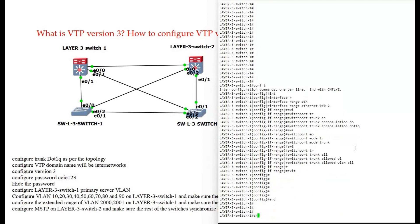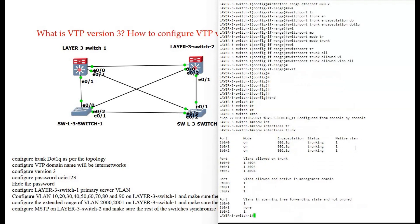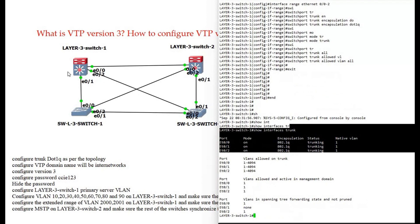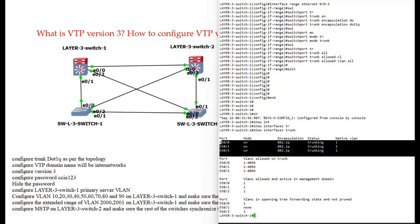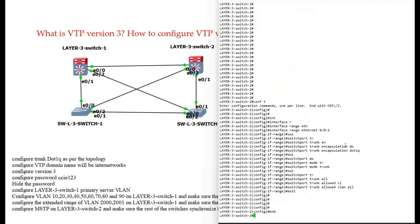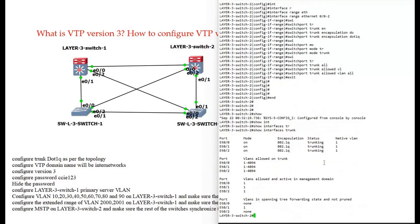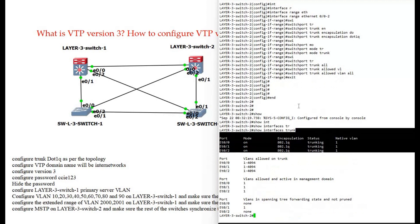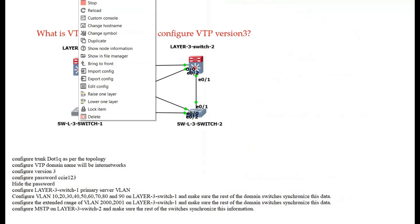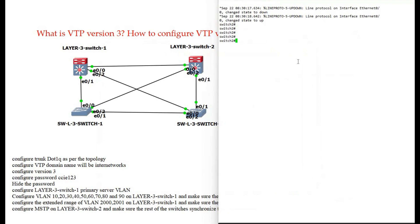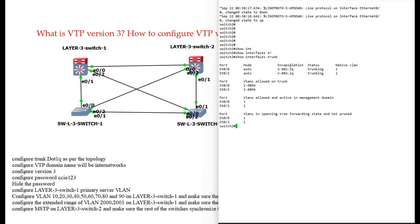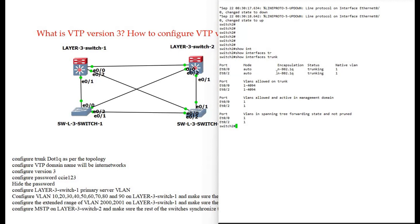Let's see how it looks. Show interfaces trunk. You can see switch 1 has three trunk links — Ethernet 0/0, 0/1, and 0/2. Same way, let's look at switch 2: show interface trunk. Everything looks good there as well. This switch has also become a trunk because of the negotiation process.